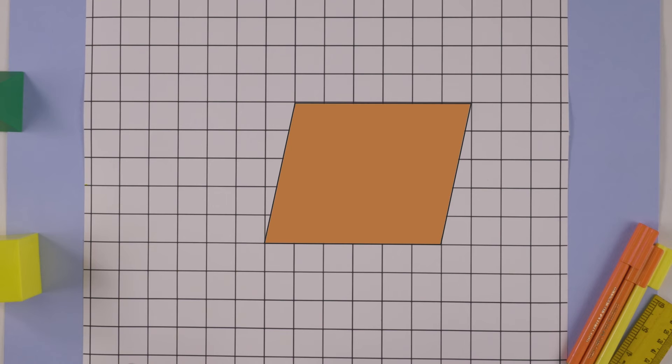Now that's how you find the area of any parallelogram. Take any of its sides as its base and measure the corresponding height. Its area is base times height.